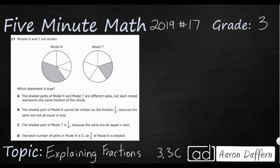We have two different circles. We have one that's model R, one that is model T. Each are broken up into five parts and each have one of those five parts shaded, but only one statement is true.